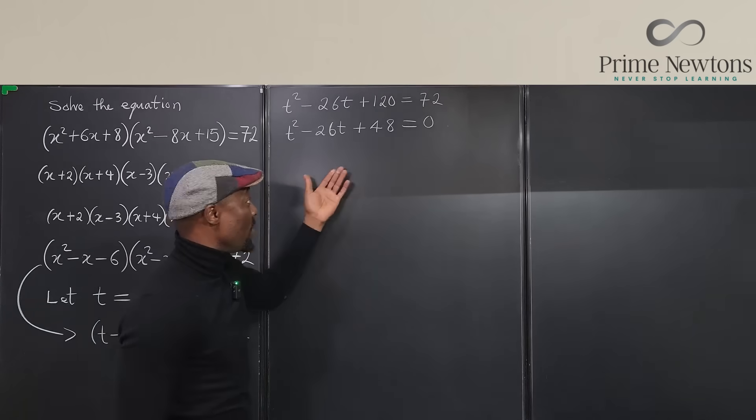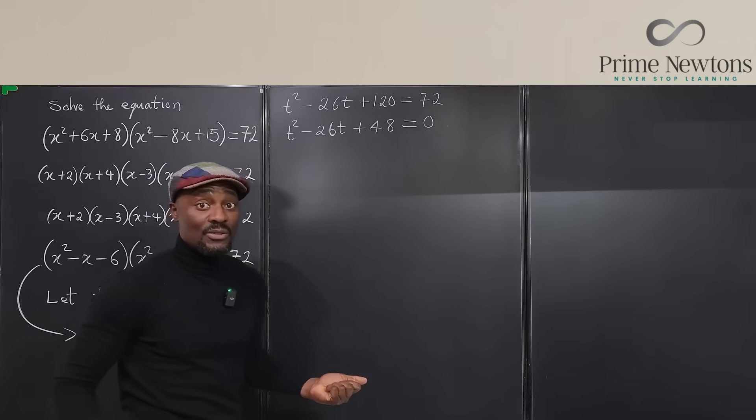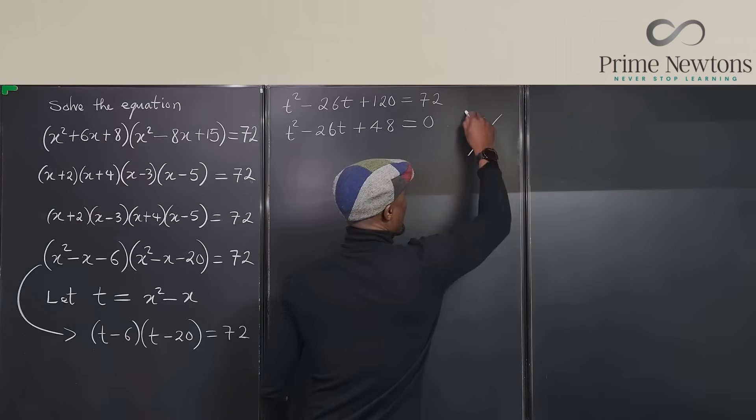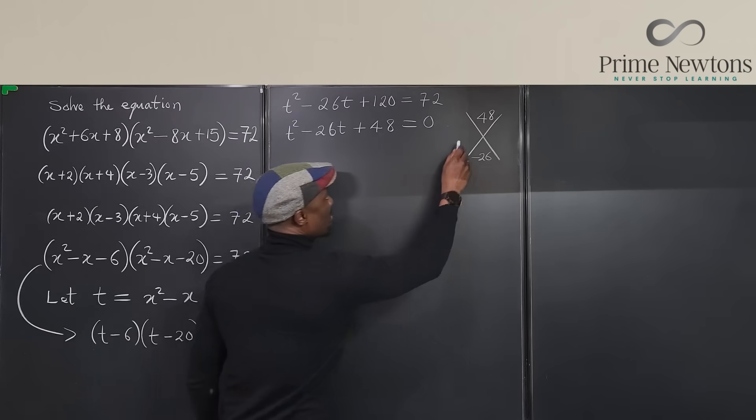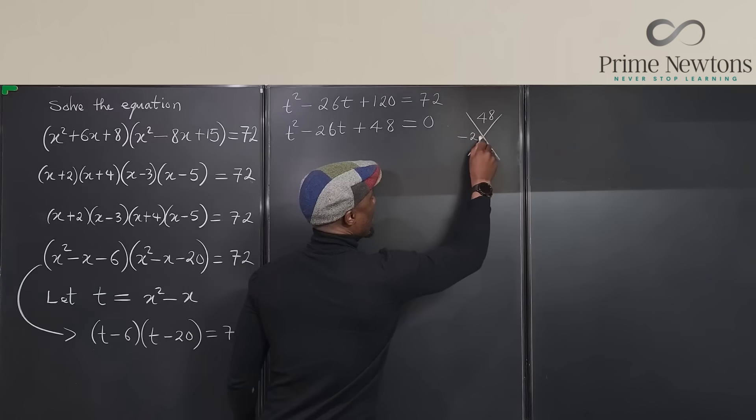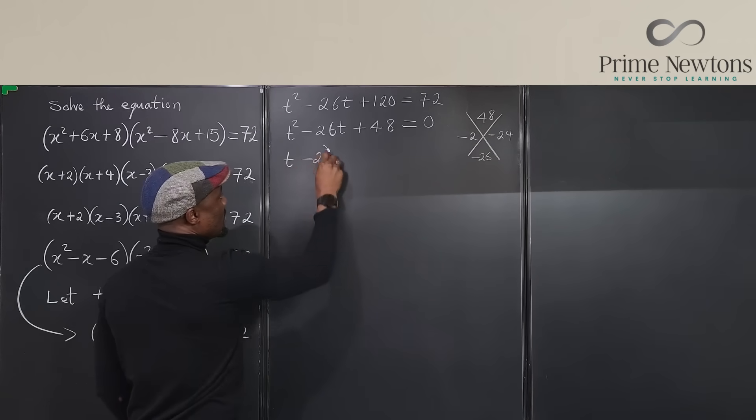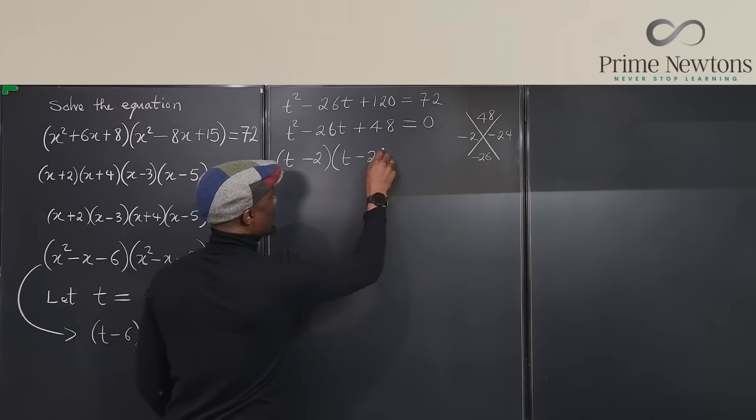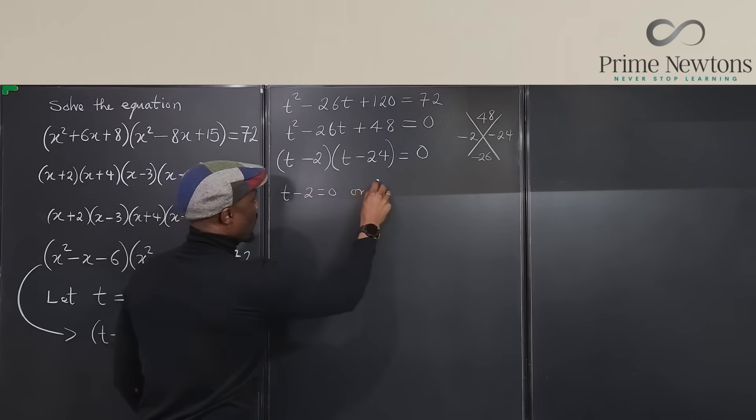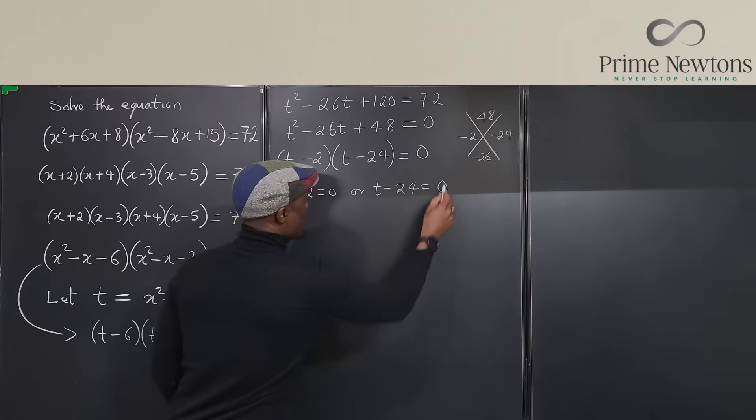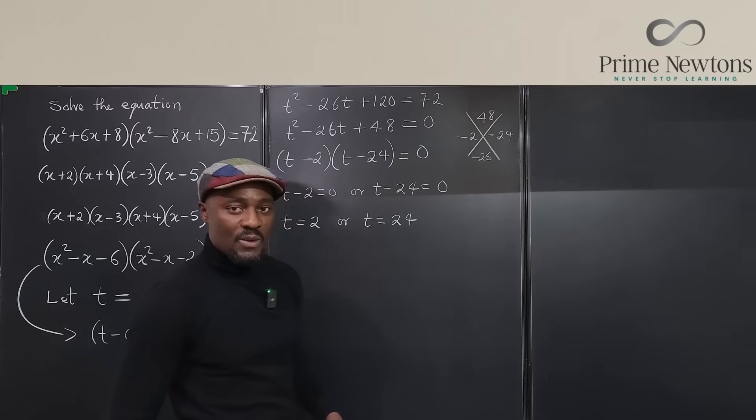Now, can this quadratic be solved? Yes, we can solve this by factoring. So by factoring, we can do this. What we do is we say, what numbers multiply to 48 and they add up to negative 26? Well, it's going to be negative 2 and negative 24. Those are the two numbers that solve this puzzle. So we're going to say the factored form is t minus 2 times t minus 24 is equal to zero. So t minus 2 equals zero or t minus 24 equals zero. So that tells us that t equals 2 or t equals 24.